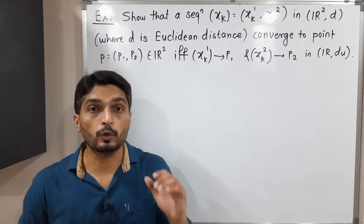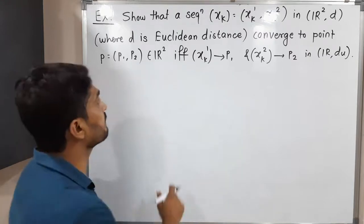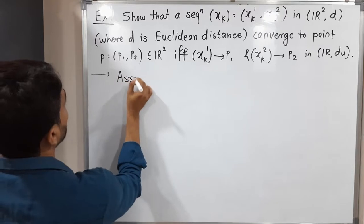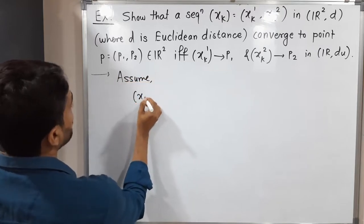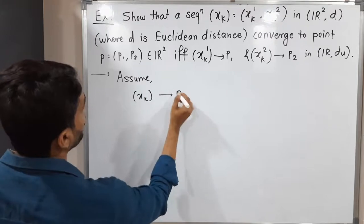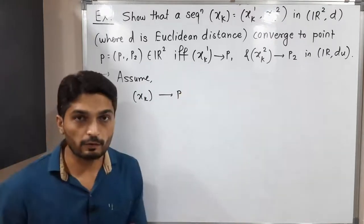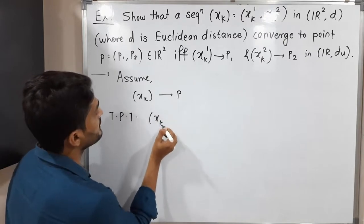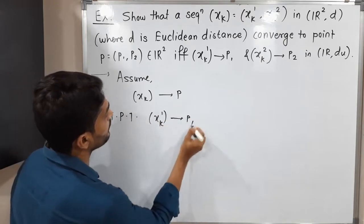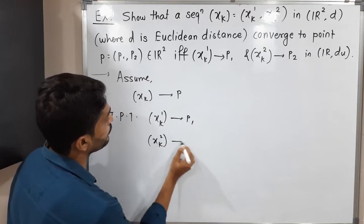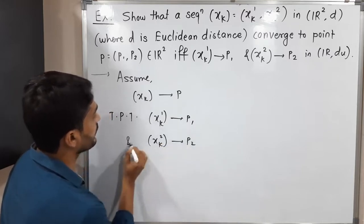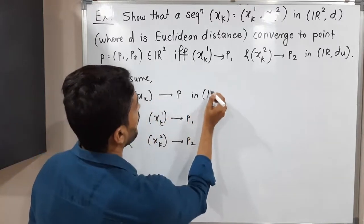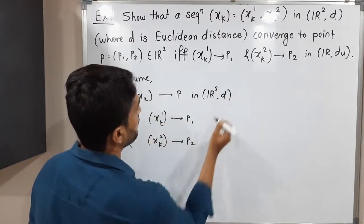Let us start with one part. We will assume that xk converges to point p. What we have to prove is that xk1 converges to p1 and xk2 converges to p2. This is in R² with d being the Euclidean metric, and the component convergences are in R with the usual metric du.